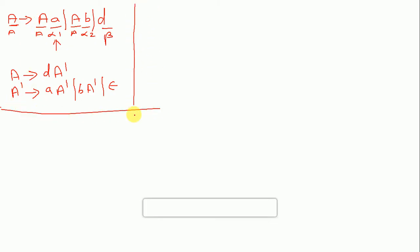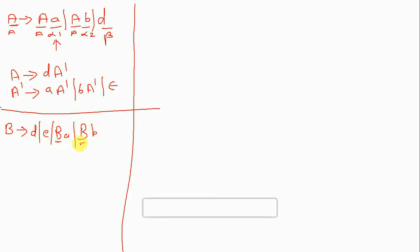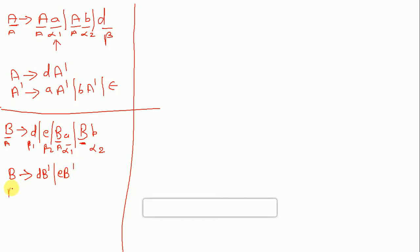Another example: B gives d e slash d a slash B b. There is left recursion here. B is my A, alpha one is 'b', beta one is 'd e', beta two is 'd a'. So B gives d e B-dash slash d a B-dash, and B-dash gives b B-dash slash epsilon. This is how we remove left recursion.